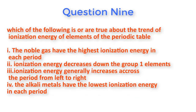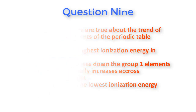Question number nine: Which of the following statements are true about the trend of ionization energy of elements in the periodic table? One: The noble gases have the highest ionization energy in each period. Two: Ionization energy decreases down the group. Three: Ionization energy generally increases from left to right across the period. Four: The alkali metals have the lowest ionization energies in each period.